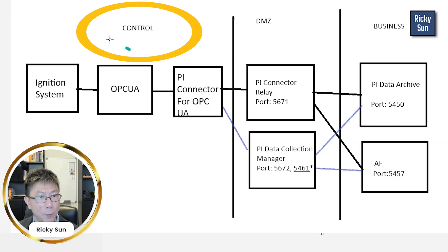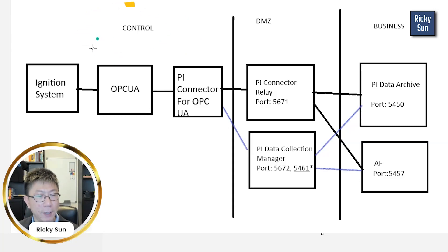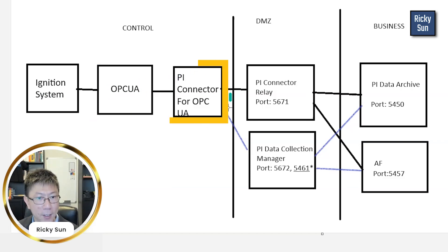If you look at my screen, I have a control network here. In my control network, I have my Ignition system with OPC UA, and I'm going to install PI connector for OPC UA inside the control network. After I did that, I was able to connect to the OPC UA source by specifying the path of OPC.TCP — that kind of thing — to get it set up.